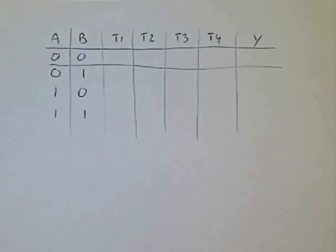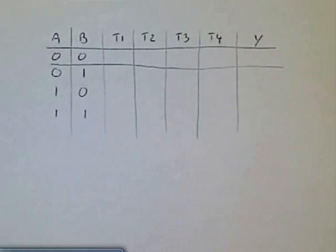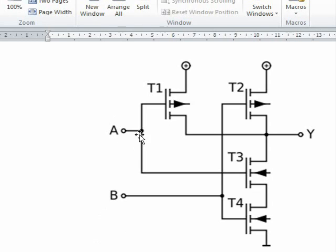In the case where A and B are both low, if A is low, then T1 is conductive, so I'm going to make that one. T3 is non-conductive, so that's zero. If B is low, then T2 is conductive, so that's one, and T4 is non-conductive, so that's zero.